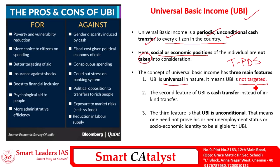That is one important feature of UBI. In the case of PDS, the government subsidizes the cost of food grains and provides it in kind. Whereas in UBI, the transfer involves cash and not any product or kind. The third important feature is that UBI is unconditional in nature — there is no social or economic condition directing the flow of UBI.